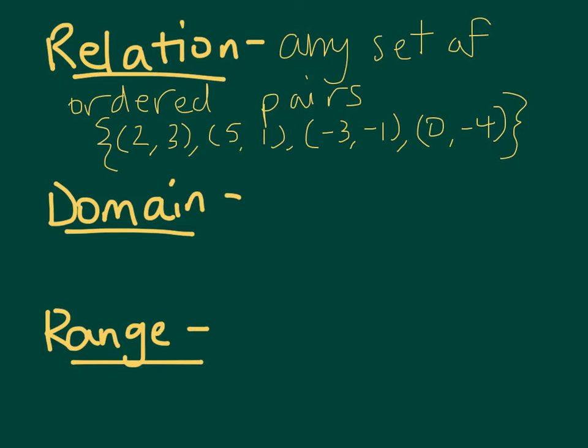The domain, you should remember from last year, is all of the x values. So the domain of the relation above would be 2, 5, negative 3, and 0.